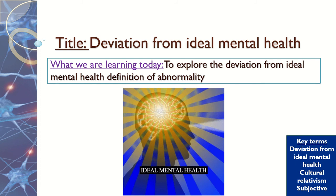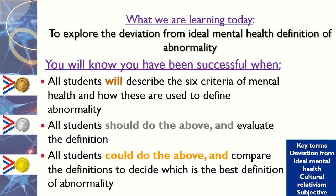Hi everyone, and today we're going to be looking at the final definition of abnormality, and that is deviation from ideal mental health. We're going to look at six criteria of mental health and how these are used to define abnormality. Then we're going to evaluate this, looking at the strengths and the weaknesses, and then maybe you can think about how you could compare the definitions to decide which is the best definition of abnormality.